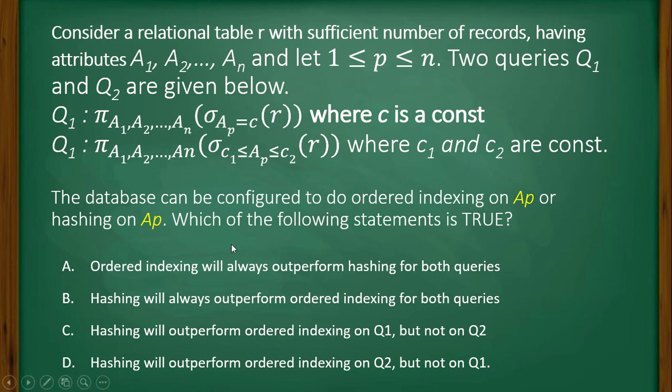We have to notice one thing: if we are thinking about ordered indexing, there must be multiple values. Indexing will be better on query two because there is a chance that we will have multiple attribute values which we can order or index orderly.